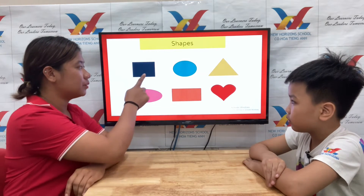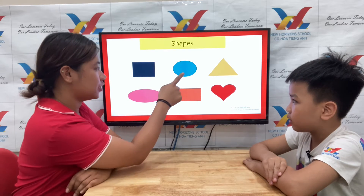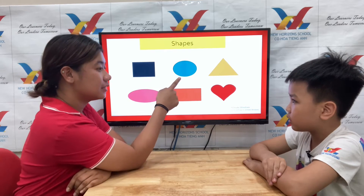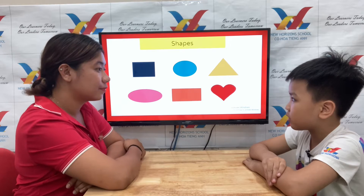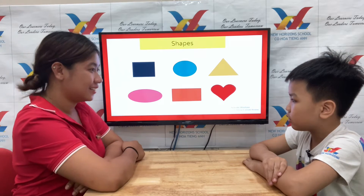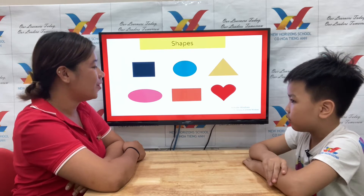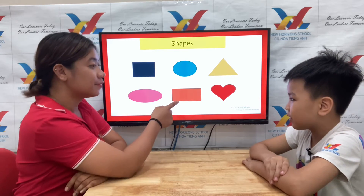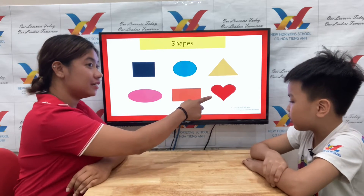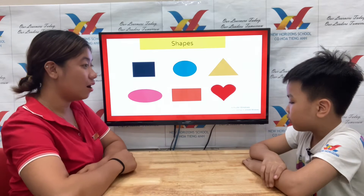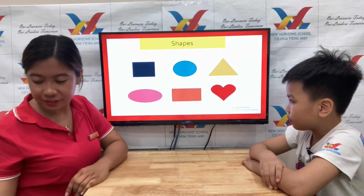What shape is this? It's a square. What shape is this? It's a circle. What shape is this? It's a triangle. What shape is this? It's an oval. It's a heart. Very good.